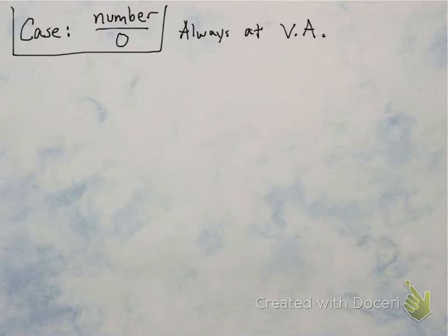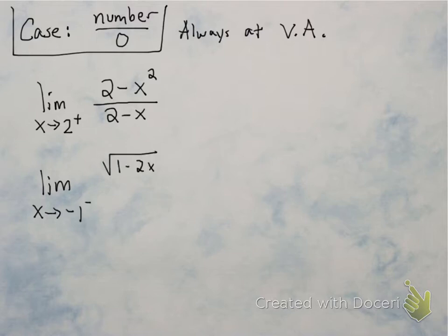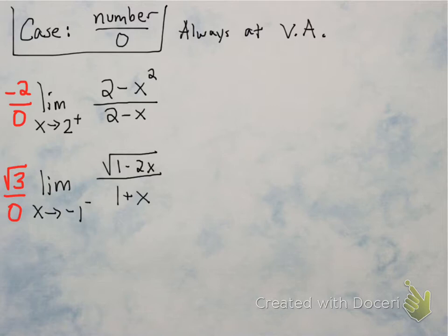The next case is when you get a number divided by 0 — meaning something that's not 0 divided by 0. This always happens at a vertical asymptote. Always try plugging in the limit number first. So if we plug in 2, or negative 1 in the second example, we get a number divided by 0. This is different from the previous case of 0 over 0. The answers to these will either be infinity, negative infinity, or the limit does not exist.